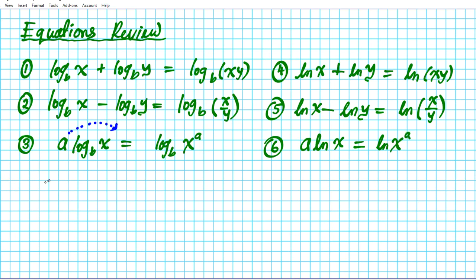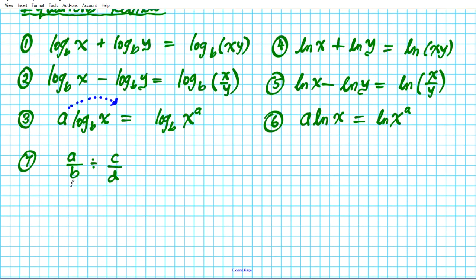The last equation to remember is the basic arithmetic rule for dividing fractions. If you have A over B divided by C over D, this is the same as multiplying the dividend by the reciprocal of the divisor — keep, change, flip. So it becomes A over B times D over C. Keep this rule in mind as we work through examples.